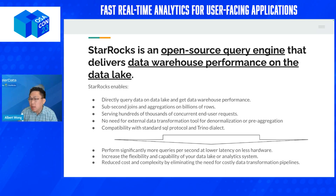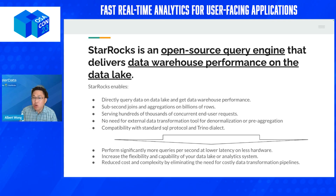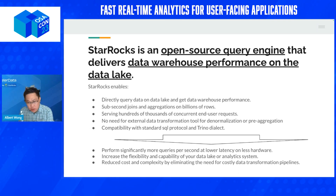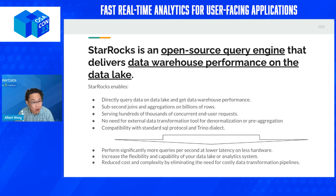Our own performance tests show about a 5% to 10% performance degradation going from AWS EBS storage to S3. But if you can absorb that 10% difference, you get 80–95% cost savings in terms of storage. There are also ways to further close the gap between local and remote storage performance.